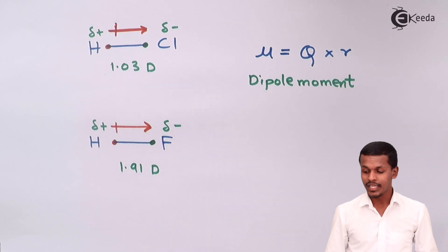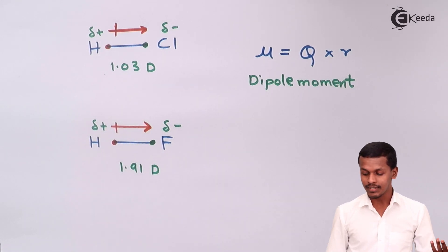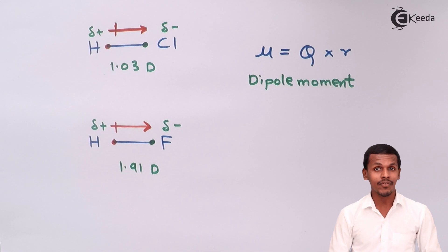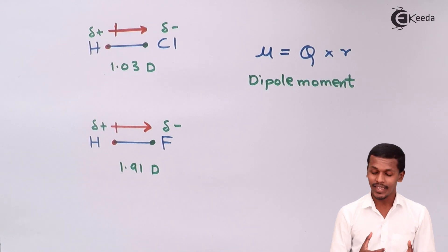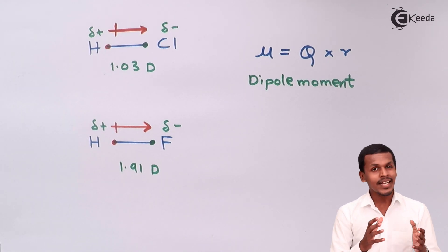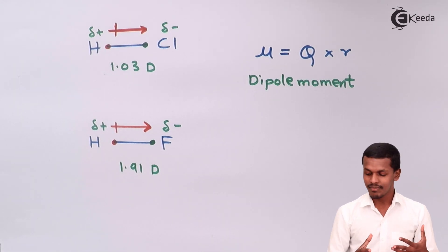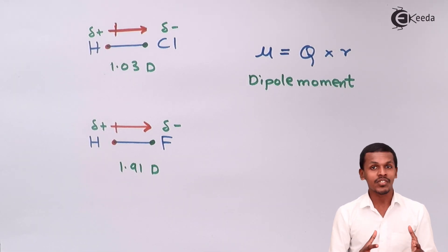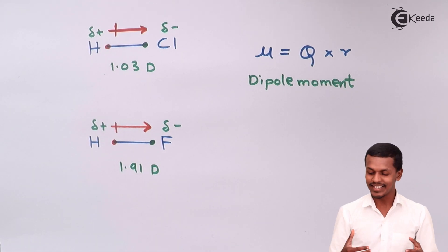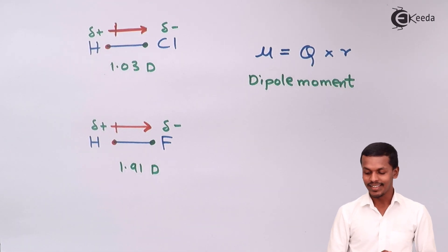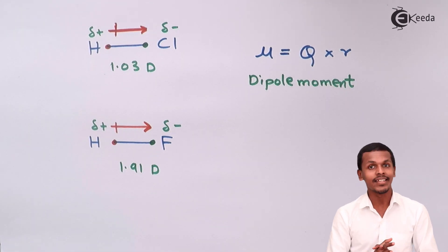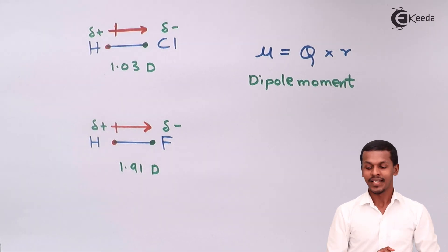These two values tell us that the dipole moment of HF is 1.91 D, which indicates that HF is much more polar than HCl. This is how dipole moment indicates the polar nature of a covalent bond.